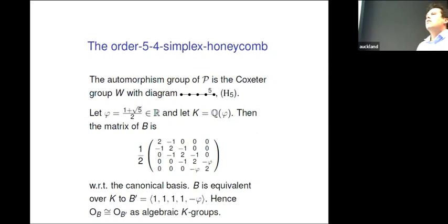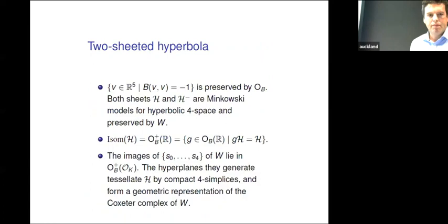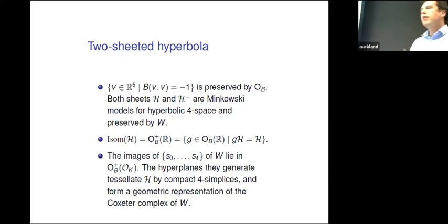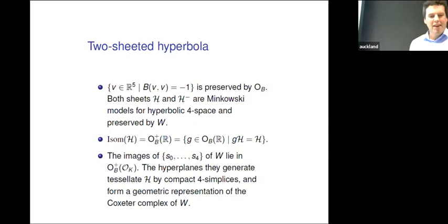You can explicitly write down the matrix for this bilinear form with respect to the canonical basis, do some linear algebra, and see that the signature is (4,1) — four positive and one negative. That's important because the form needs to be indefinite, since if it's definite or semi-definite I can't get expansion. These correspond to the same algebraic groups. The bilinear form where B equals minus one is preserved, and both sheets of the resulting hyperboloid are Minkowski models for hyperbolic 4-space. Looking at the images of these generators, they give hyperplanes that generate a tessellation of H^4 by compact 4-simplices.